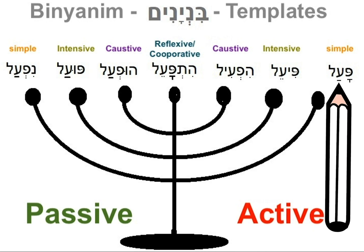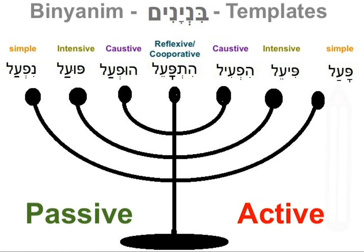Pa'al is the basic Binyan, and most verbs in Hebrew are found in this Binyan. But don't be alarmed — it must be noted that most shorashim don't use all of the available Binyanim. A lot of the shorashim, or roots, can only fit into two or three Binyanim and have no meaning if put in other Binyanim.